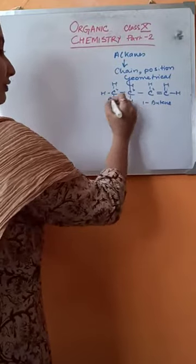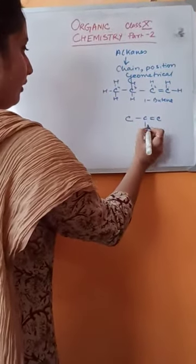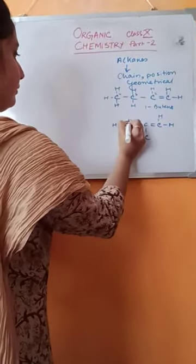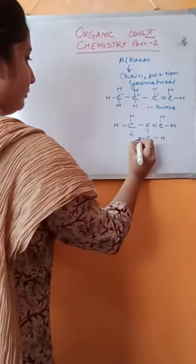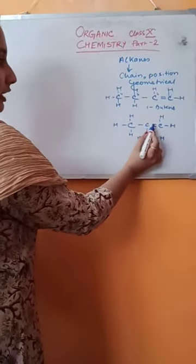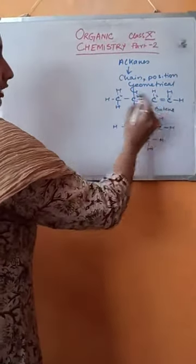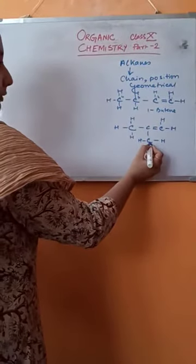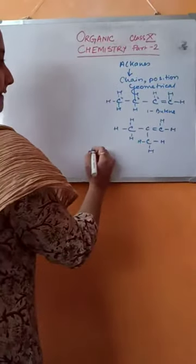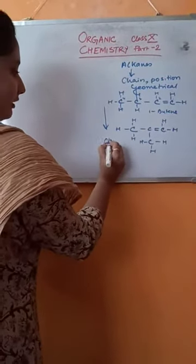Now I will show you chain isomers of alkenes, taking 1-butene as the example. This is a straight chain of carbon atoms, and here we take another carbon atom not in a straight chain but in a branched form. These two are known as chain isomers.